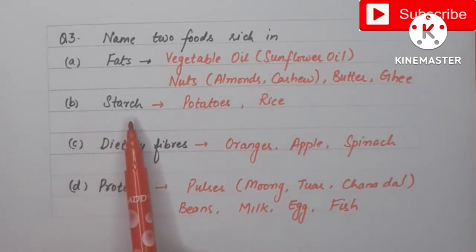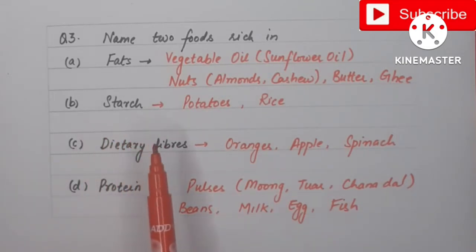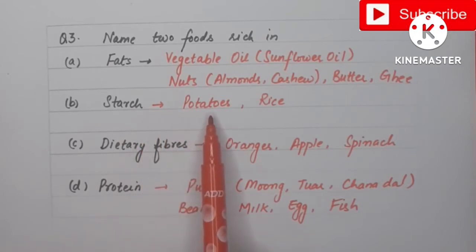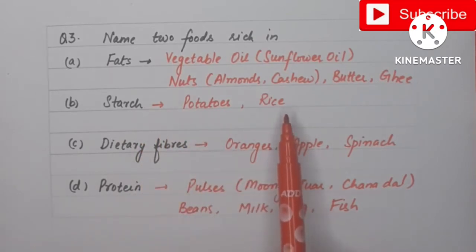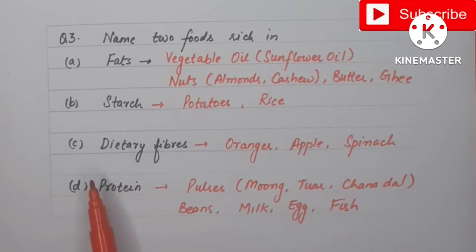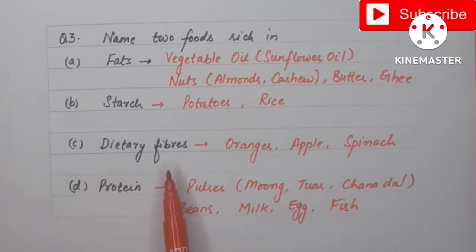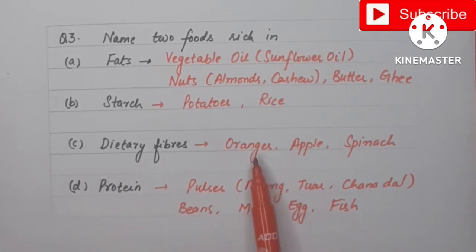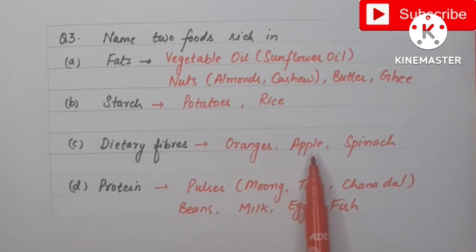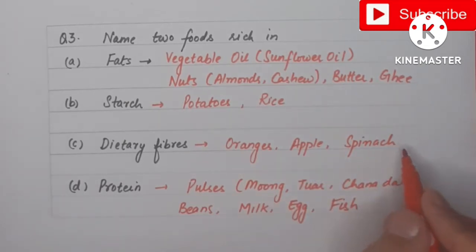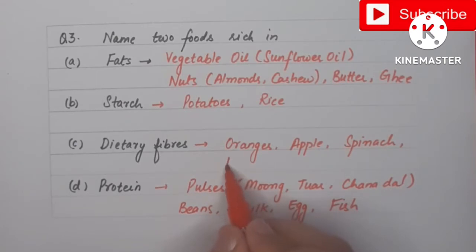Next is starch — starch is a type of carbohydrate, and its rich sources are potatoes and rice. Third one is dietary fibers, which are mainly found in plant products such as fresh fruits and vegetables like oranges, apples, spinach, and whole grains.